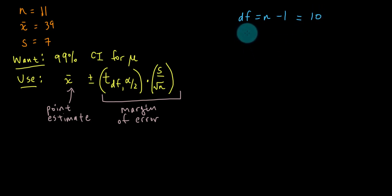The alpha, that little fishy, is the complement to 99%, so 0.01. But we need to chop that in half, 0.005.